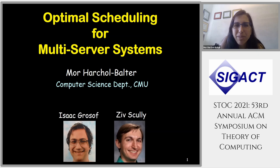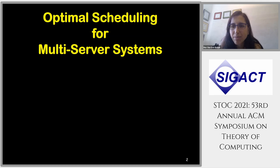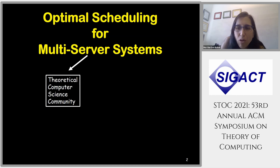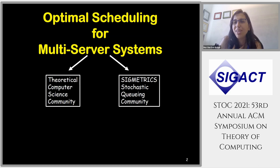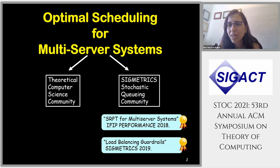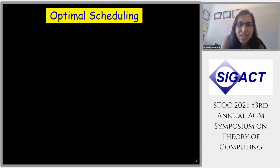Thank you for having me. My name is Moore Harkle Balter. I'm in the computer science department at CMU, and I'm going to be talking about optimal scheduling for multi-server systems. This is joint work with my two PhD students, Isaac Grossoff and Zeev Scully. The topic of optimal scheduling for multi-server systems is popular in both the theoretical computer science community and my community, the stochastic queuing community. I'll be talking about two award-winning papers on optimal scheduling.